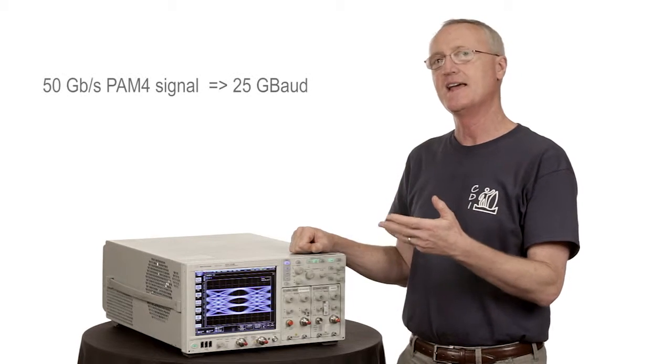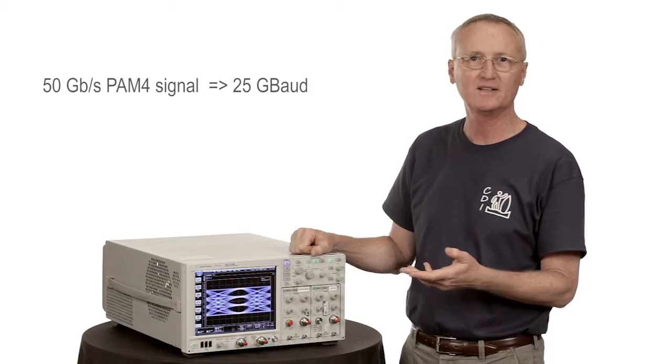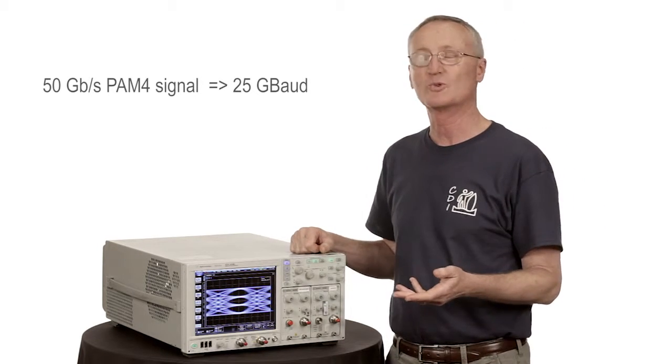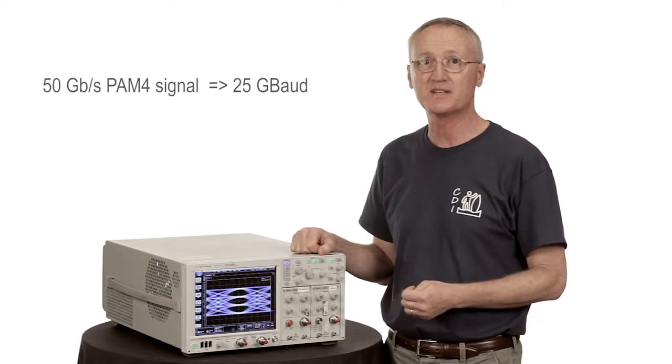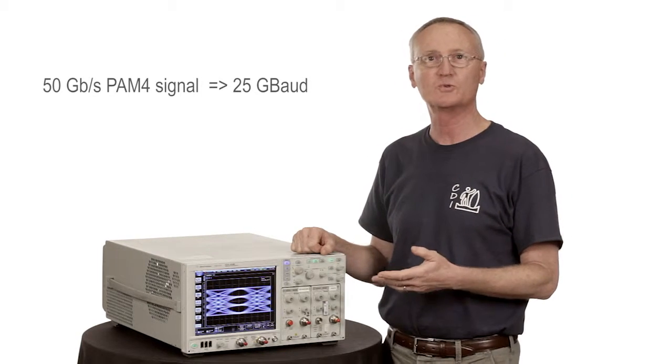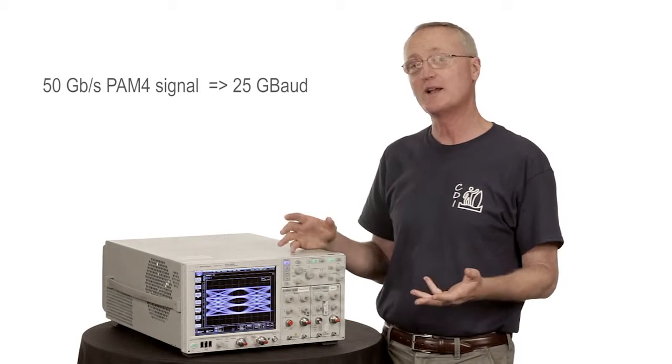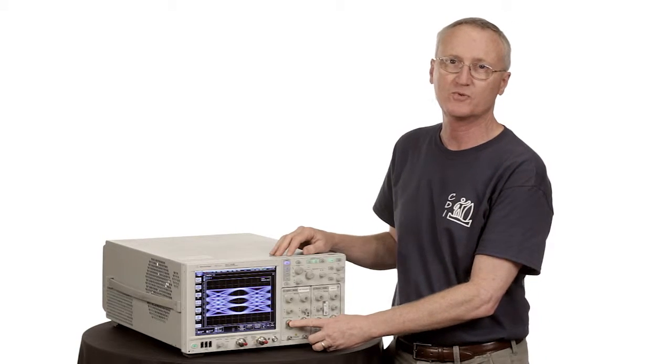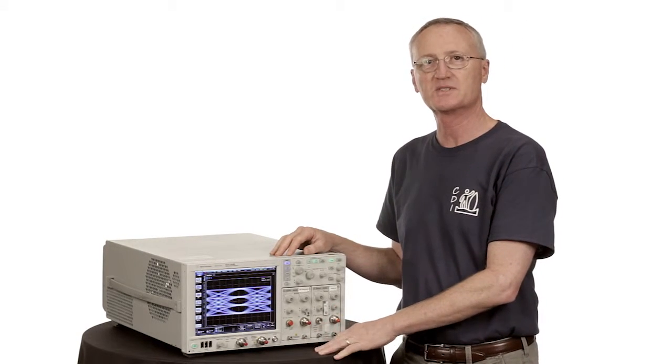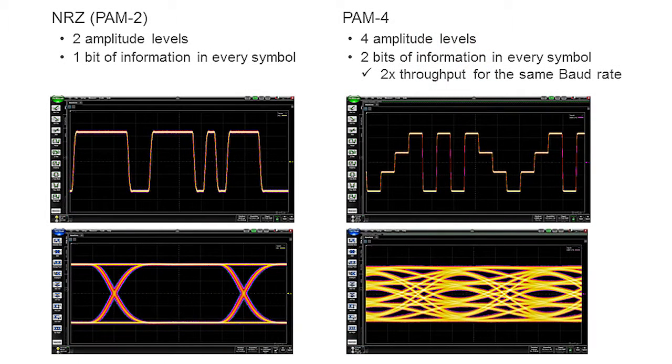So a 50 gig NRZ optical signal would have a baud rate of 25 gig. The reference receiver for that, we'd expect would be roughly 75% of that baud rate, which would be 19 or so gigahertz. Effectively, what happens is the very same reference receiver that we used for 25 gigabit per second is likely to be the reference receiver that would be used for a 50 gigabit per second PAM-4 signal.